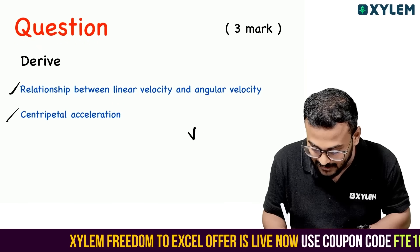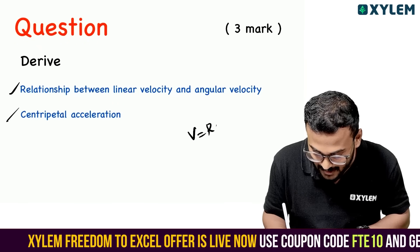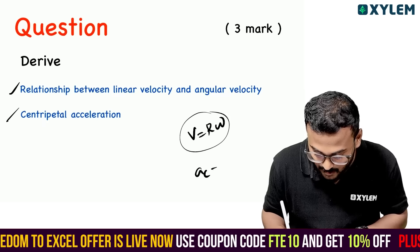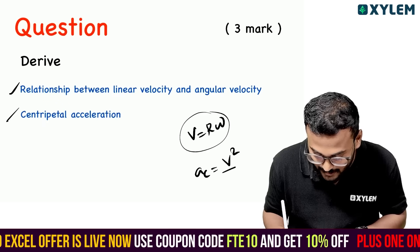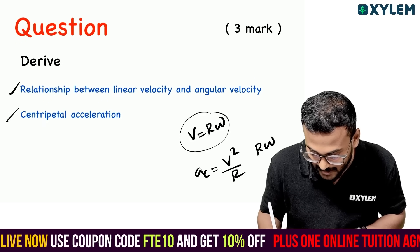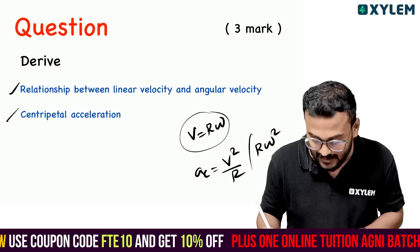Linear velocity: v equal to r omega. Centripetal acceleration equal to v-squared by r, which is also r omega-squared.